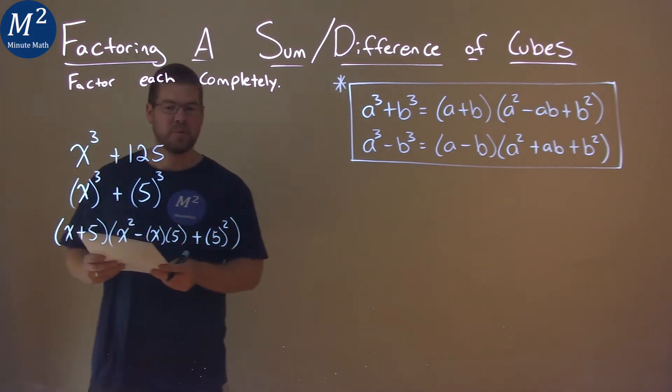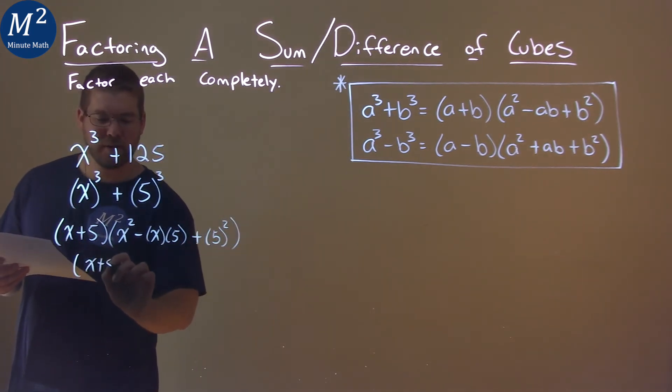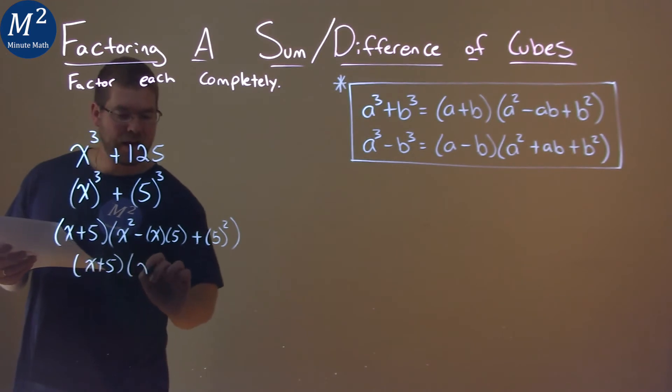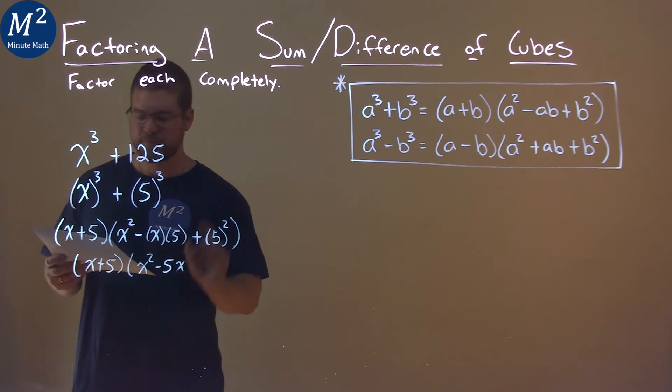And it's pretty much that simple. So let's just simplify it. We have x plus 5 here, and then x squared. x times 5 will be 5x, so minus 5x. And 5 squared is just, well, 25.